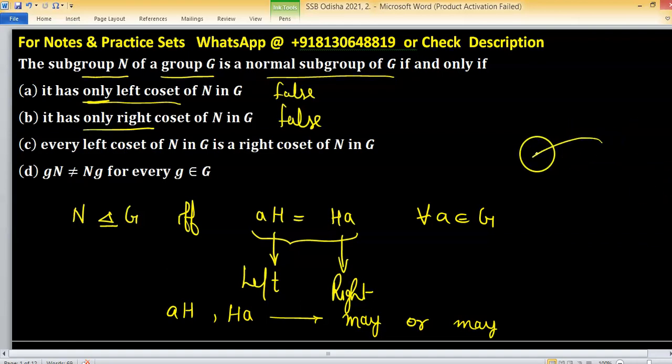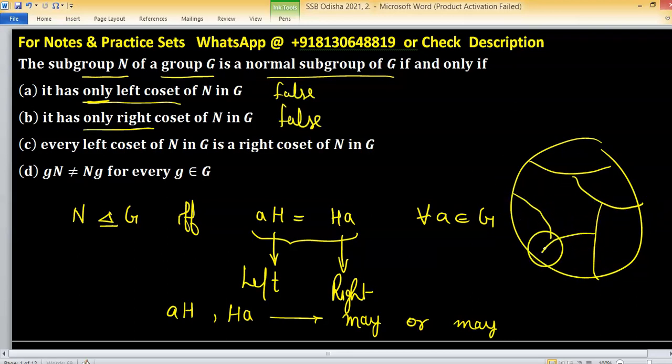Suppose this is a group and you divide this group into several parts. So these several parts you can represent by cosets. So these are cosets, different different cosets.